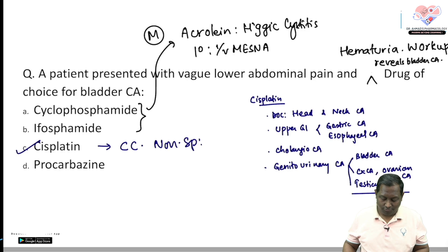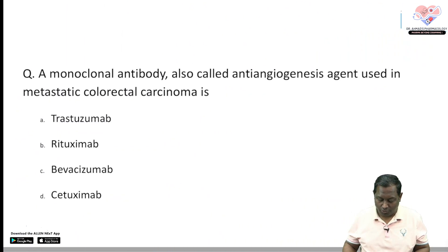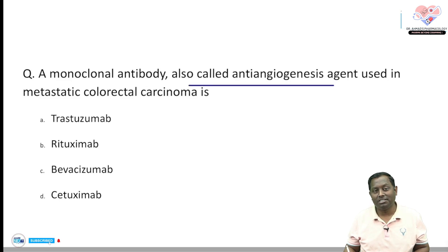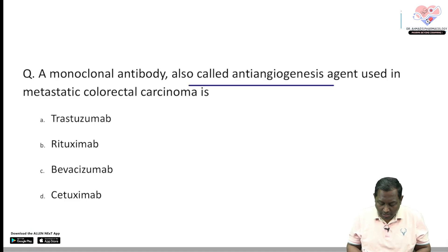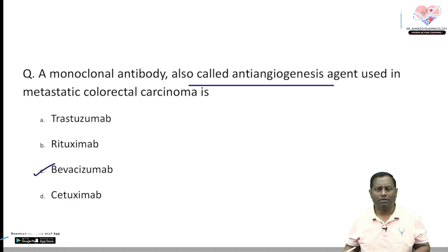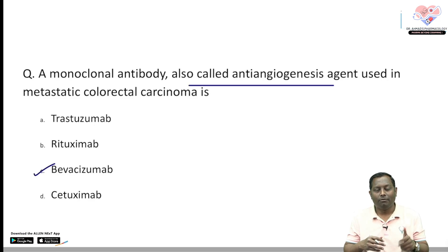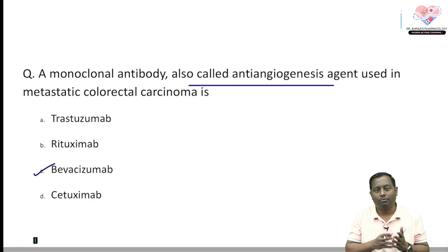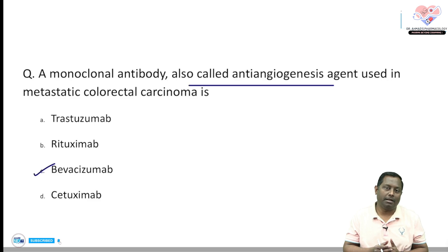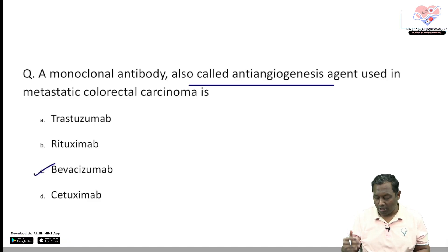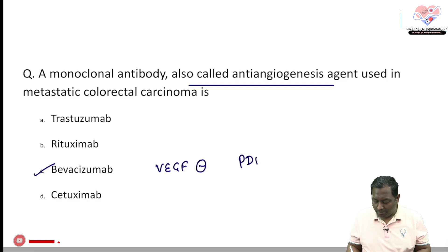For prevention of hemorrhagic cystitis caused by cyclophosphamide or ifosfamide, we add IV mesna along with therapy. Procarbazine is another cell cycle non-specific anti-cancer drug but is not the drug of choice for bladder carcinoma. Bevacizumab is a monoclonal antibody and anti-angiogenesis agent used in metastatic colorectal carcinoma. The mnemonic: 'Bevacizumab, Ranibizumab, Brolucizumab, and Pegaptanib' — 'Bevo kuf rani brought a pig.'